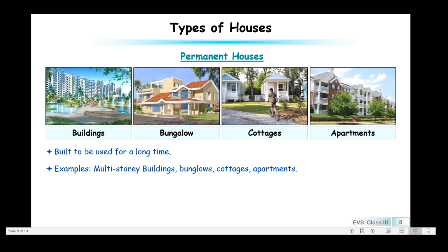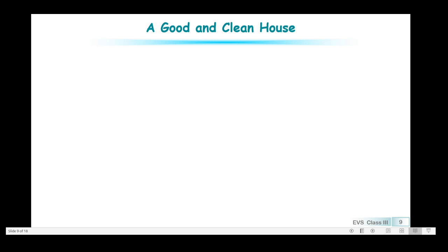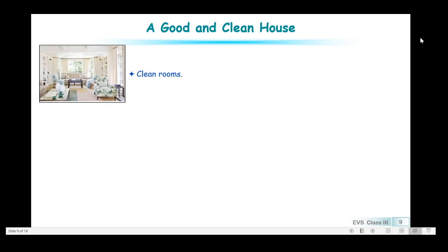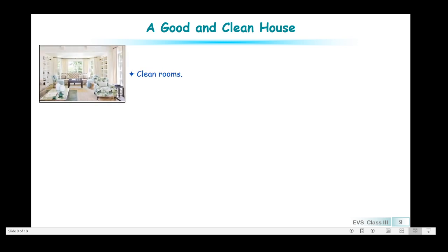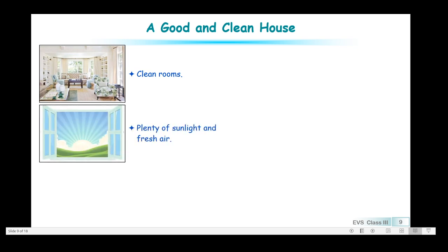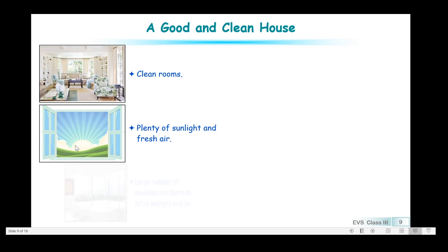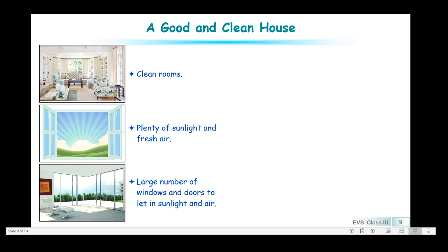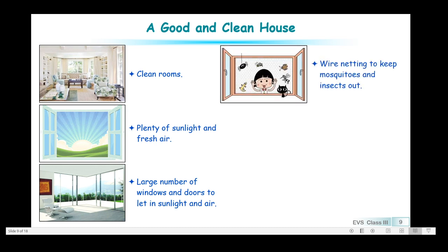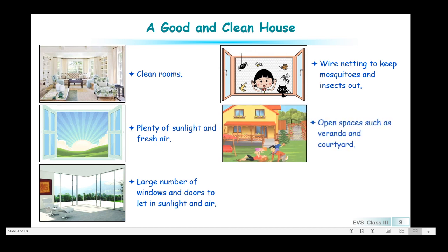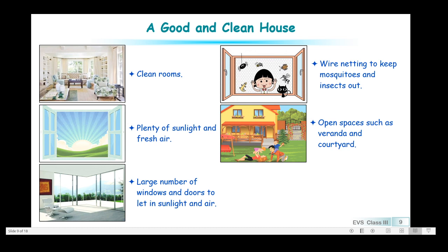Now let us switch over to a good and clean house. A house is good and clean when it has clean rooms, plenty of sunlight and fresh air — sunlight kills germs — a large number of windows and doors to let in sunlight and air and allow stale air to escape, wire netting to keep mosquitoes and insects out, and open spaces such as a veranda and courtyard where children can play and elders can enjoy fresh air.